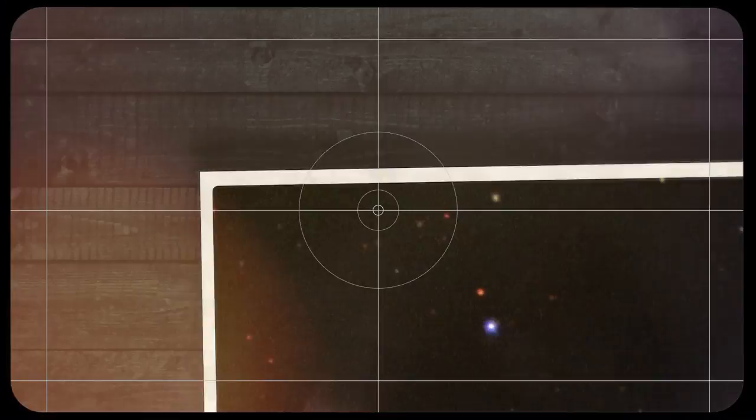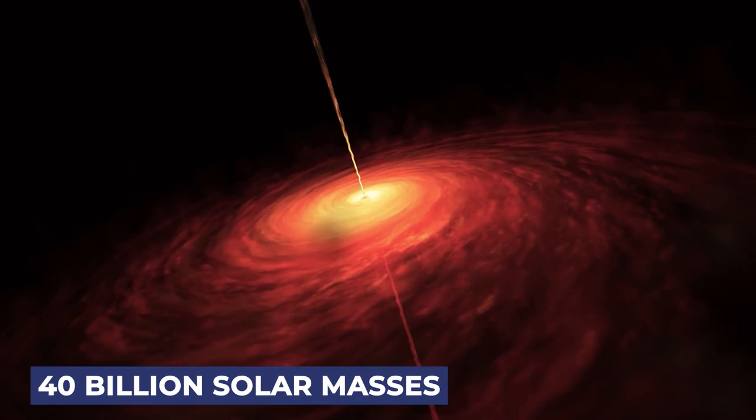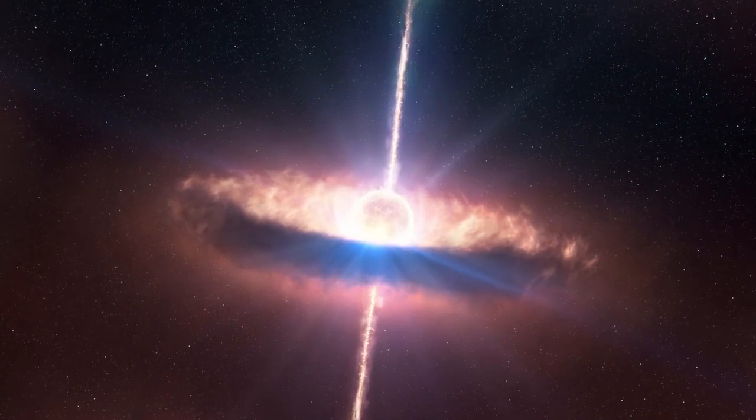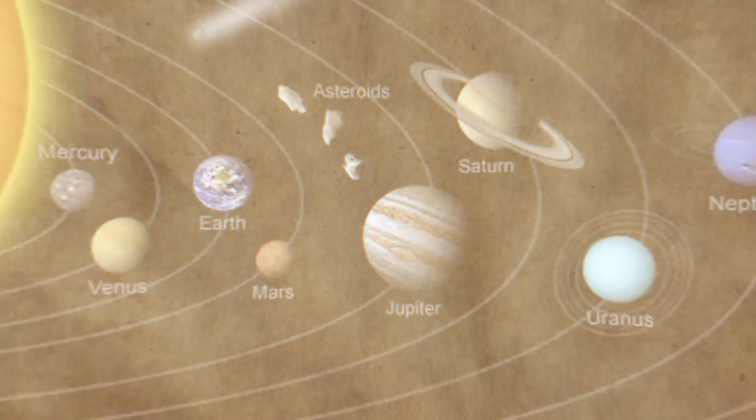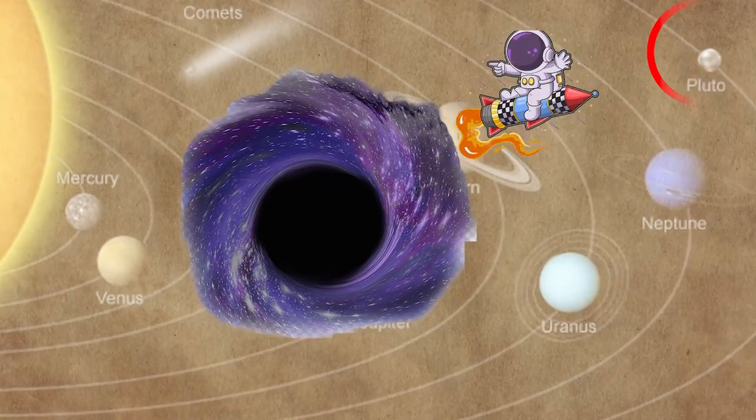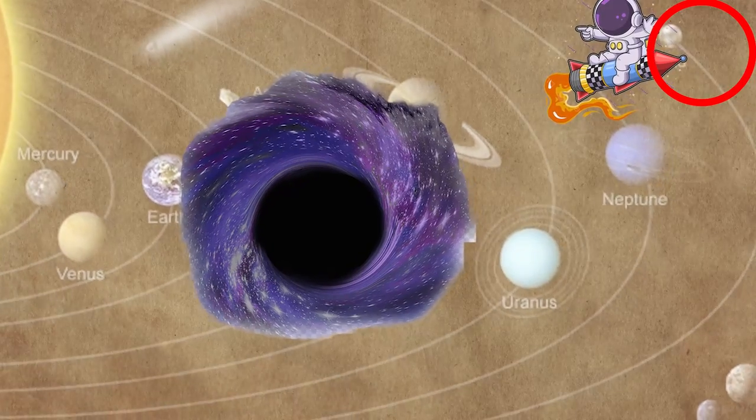The largest directly observed black hole with a confirmed mass is right around this limit, and it's a monster named TON 618. This behemoth weighs roughly 40 billion solar masses and has a radius of over 1,000 astronomical units. To put that in perspective, if the black hole were placed in the center of the solar system, by the time you reached Pluto, you would be less than 5% of the way from the center of the black hole to its edge.